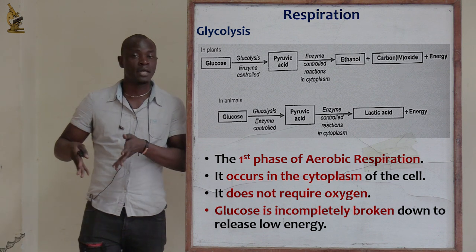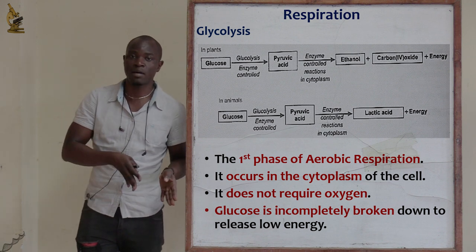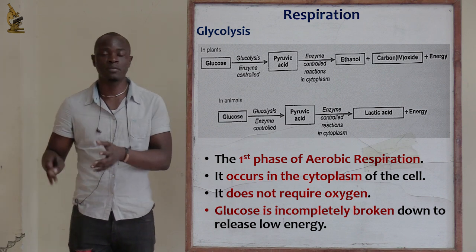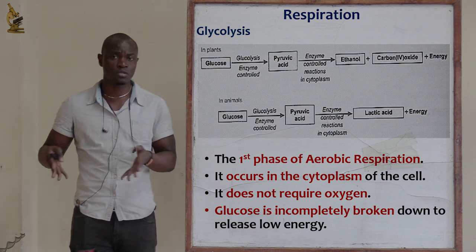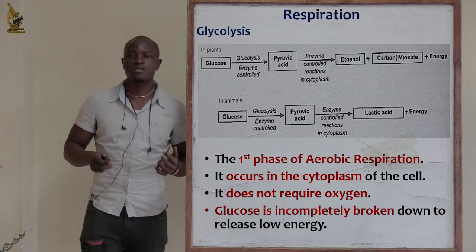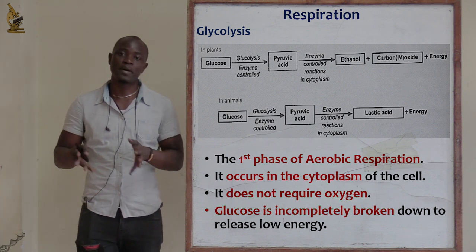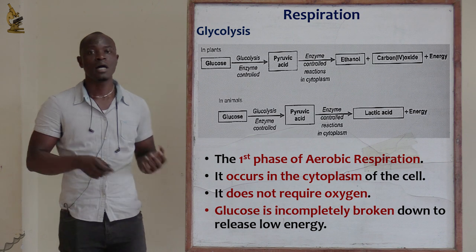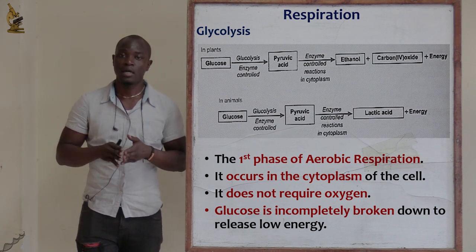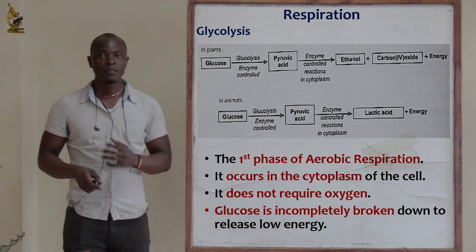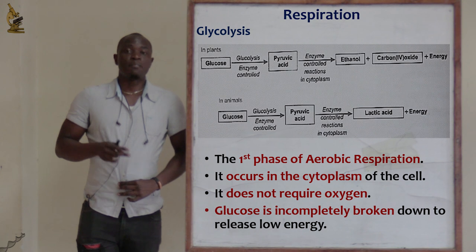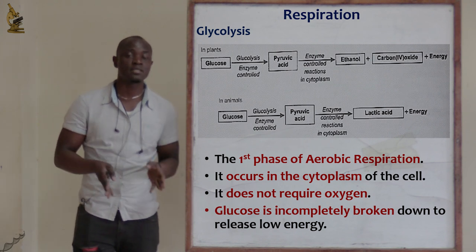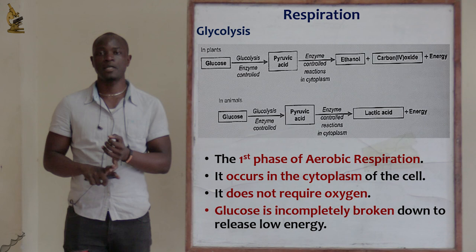If cells do not get enough oxygen, the pyruvic acid will be partially broken down to lactic acid in animals and ethanol in plants, resulting in incomplete breakdown and very low energy produced. In glycolysis, glucose is broken down in the absence of oxygen to produce ethanol in plants and lactic acid in animals.